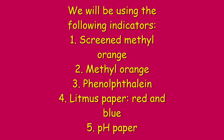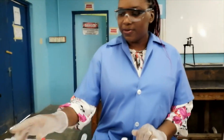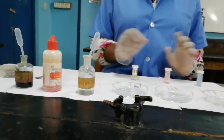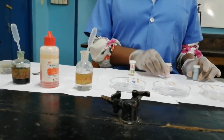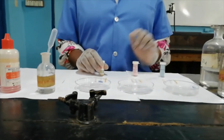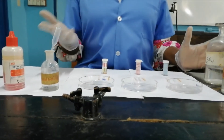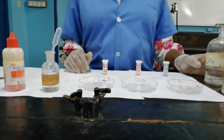We're now going to look at the colors of different indicators in acids. We have five indicators: screened methyl orange, methyl orange, phenolphthalein, litmus — red and blue litmus paper — and pH paper. I want to show you the effect or color that each indicator will show in acids.